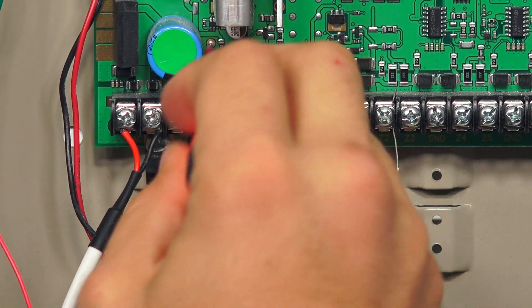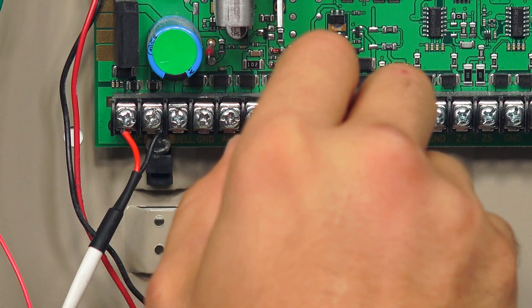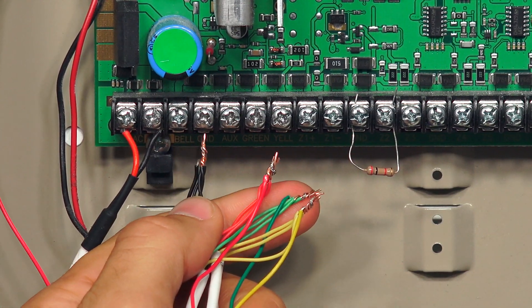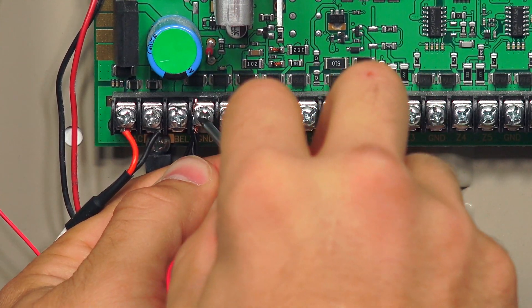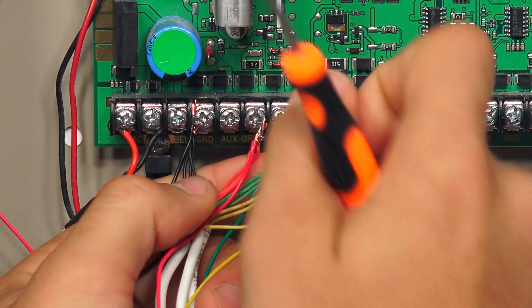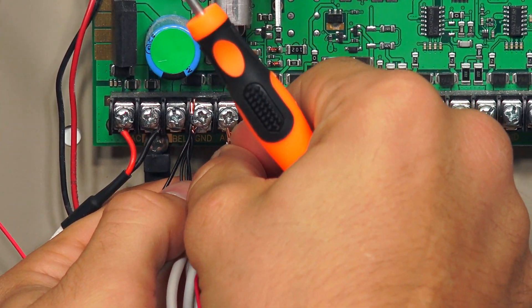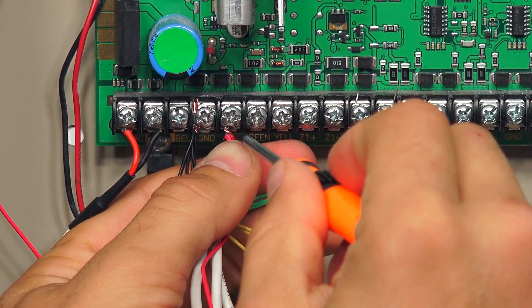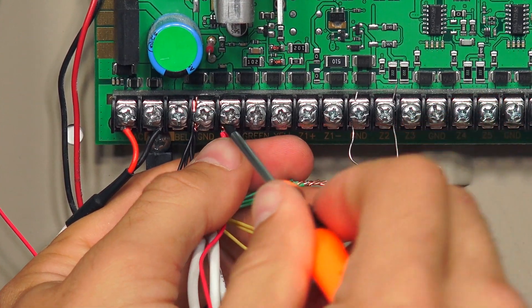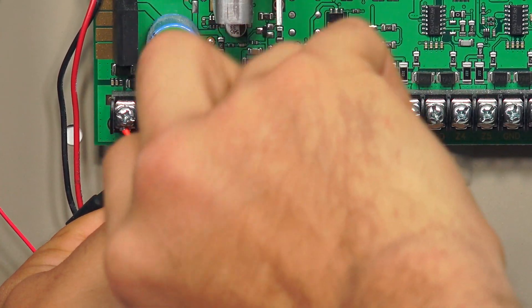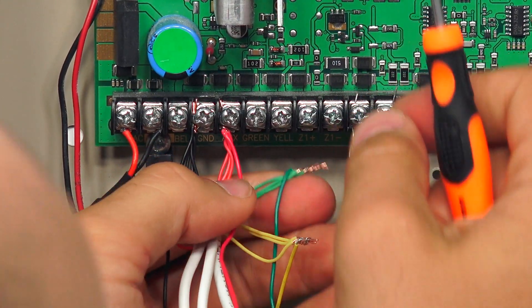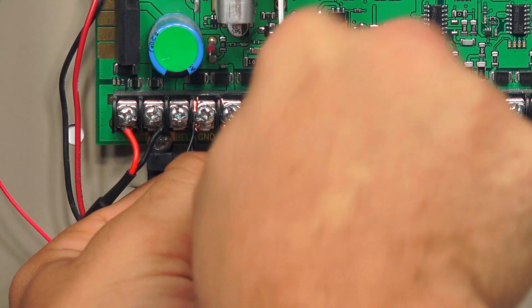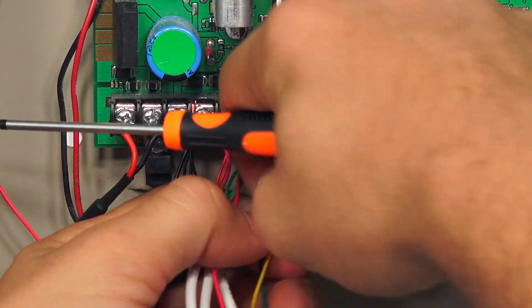So because our bundles are a little bigger, I'm just going to make sure that my terminals are loose enough so that we can easily slip them under. First, we'll do the black, then we'll do the red, then we'll do the green, and then we'll do the yellow.